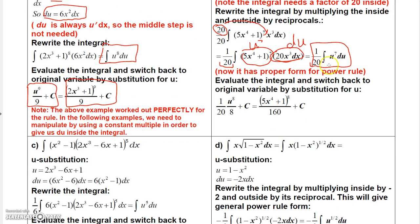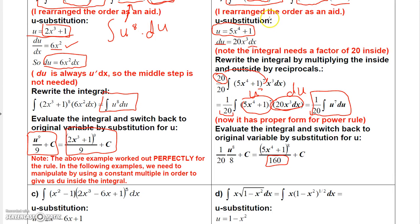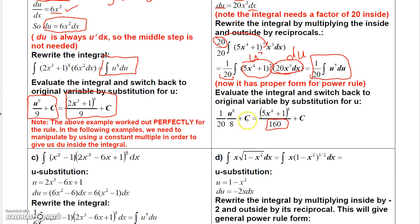Now, if I integrate u to the 7th, that's just u to the 8th over 8. But remember, we're multiplying that by 1 over 20. So when you multiply 1 over 20 by u to the 8th over 8, the denominator is going to be 160, because 20 times 8 is 160. Then we go back and replace u with 5x to the 4th plus 1, so we get 5x to the 4th plus 1 to the 8th over 160, plus a constant. That's your antiderivative.